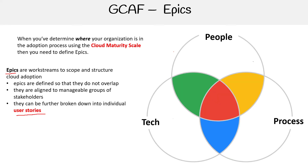We have this Venn diagram where we have three areas: people, processes, and tech — just broad categories of different kinds of epics. Everything within this Venn diagram is going to be epics.